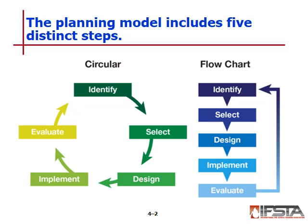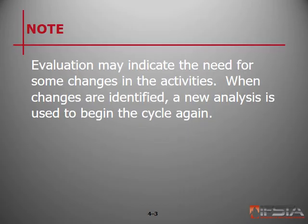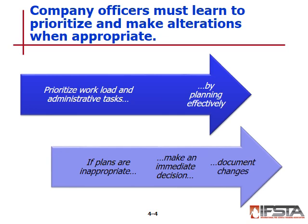Effectiveness may be immediate, such as successful extrication of a victim, or it may be prolonged, such as the improved relationships of crew members. It's important to note that evaluation may indicate the need for some changes in the activities. When changes are identified, a new analysis is used to begin the cycle again. Company officers must prioritize their workloads and administrative activities to accomplish assigned goals, and should plan effectively — which improves with practice. Examples of company-level planning can include tasks and activities, pre-incident planning, company-level training, and company-level inspections.